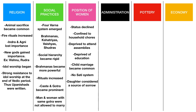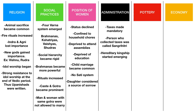Coming to administration in the post-Vedic phase, taxes were made mandatory. A person who collected taxes was given the name Sangrihitri. Hereditary kingship started emerging — meaning a king's son would also become king after the king's term. This hereditary process started in this later Vedic phase.